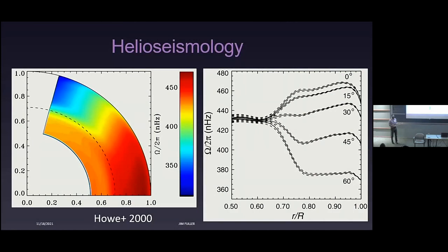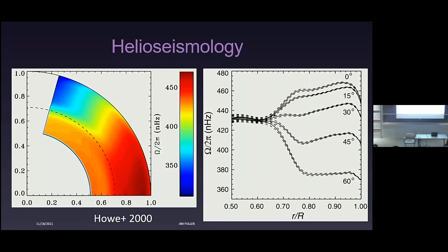Let me start with data. The helioseismic data has been around for a long time. What you see in the sun is that the convective envelope rotates differentially — there are beautiful measurements of both latitudinal and radial differential rotation in the convective envelope. In the radiative core, basically as far as we can tell, all the radiative core rotates nearly rigidly, maybe a few percent deviation at most. We don't have very good measurements for the inner 25% or so of the sun, but the part of the radiative core we can see rotates approximately rigidly. To explain that, you need some efficient angular momentum transport in the sun.